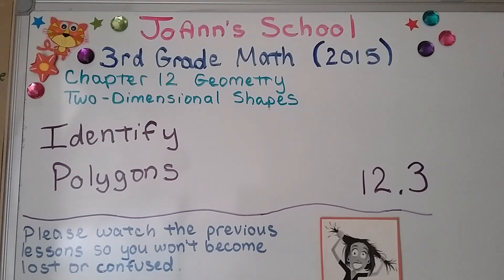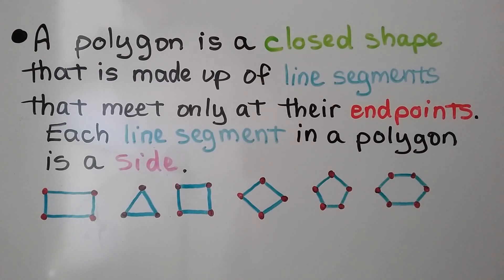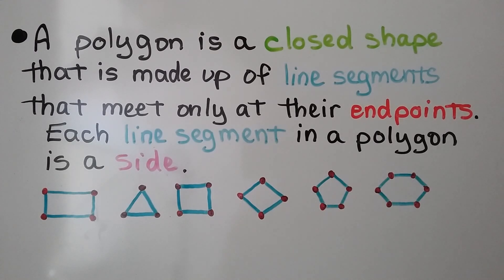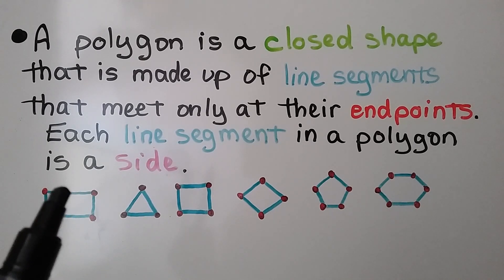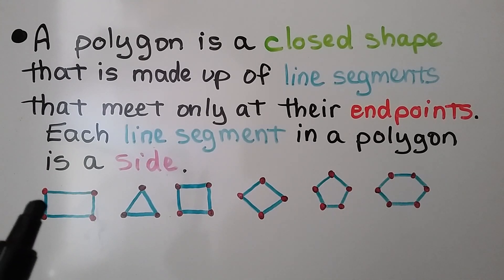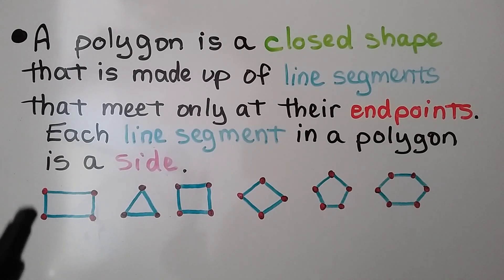Lesson 12.3: Identify Polygons. A polygon is a closed shape that is made up of line segments that meet only at their endpoints, and each line segment in a polygon is a side. For this rectangle, we have one line segment right here, two, three, four line segments, and each line segment meets at an endpoint, shown by these red dots.